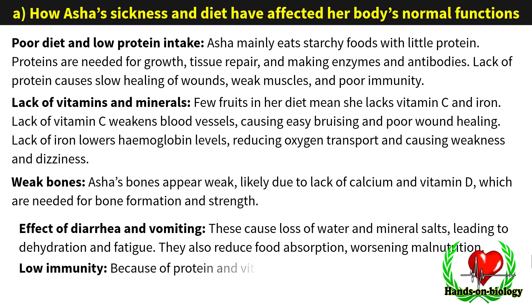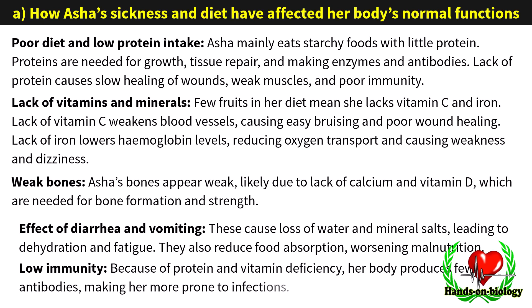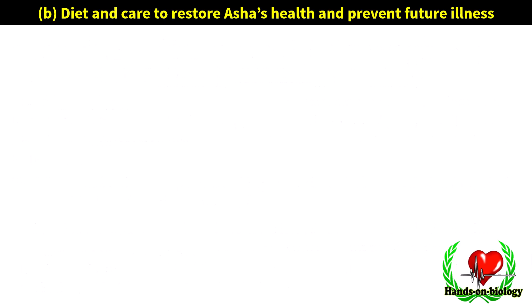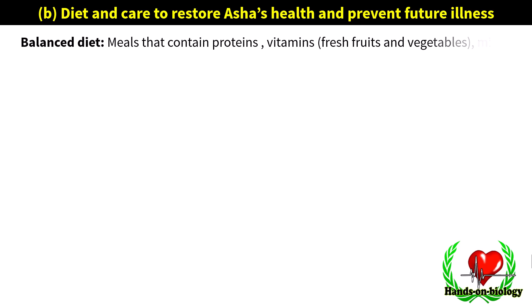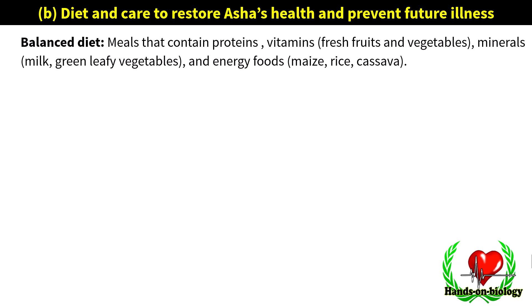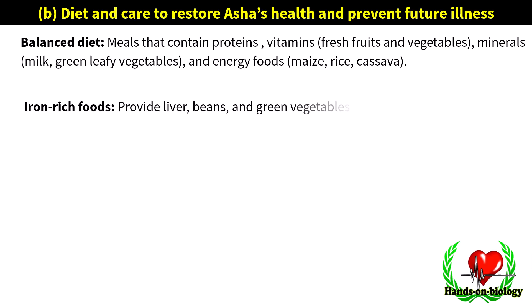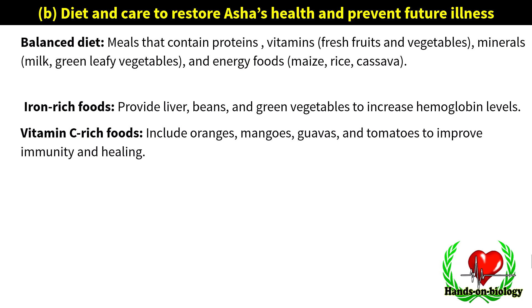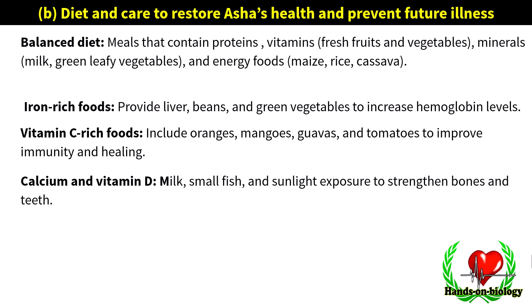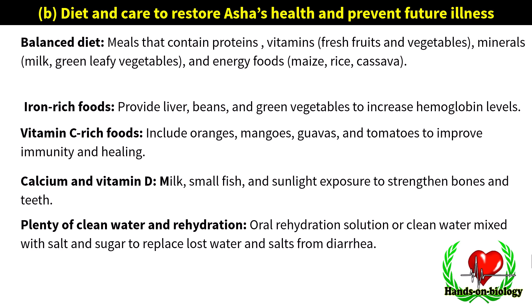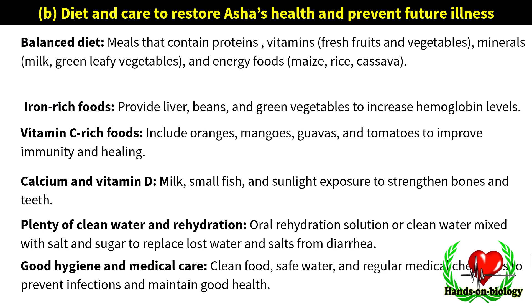Low immunity: because of protein and vitamin deficiency, her body produces fewer antibodies, making her more prone to infections. Diet and care to restore Asha's health: balanced diet with proteins, vitamins, fresh fruits and vegetables, and minerals — milk, green leafy vegetables, and energy foods like maize, rice, and cassava. Iron-rich foods like liver, beans, and green vegetables to increase hemoglobin levels. Vitamin C-rich foods like oranges, mangoes, guavas, and tomatoes to improve immunity and healing. Calcium and vitamin D from milk, small fish, and sunlight exposure to strengthen bones and teeth. Plenty of clean water and oral rehydration solution to replace lost water and salts from diarrhea and vomiting. Clean food, safe water, and regular medical checkups to prevent infections and maintain good health.